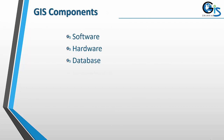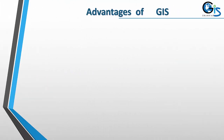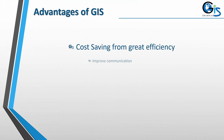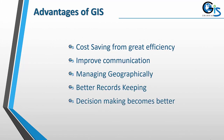Now let's see GIS components. These are the components of GIS: software, hardware, database management and procedure, people, and network. Advantages of GIS include cost saving from greater efficiency, improved communication, better management of geographic records, and better decision making.